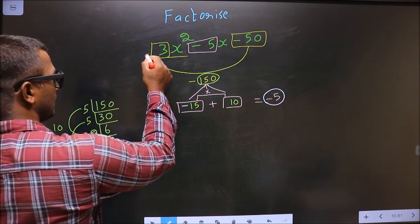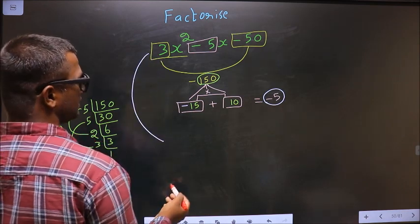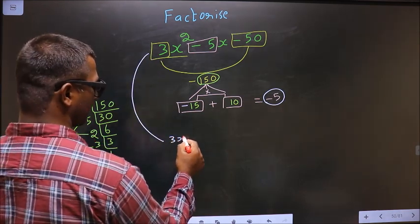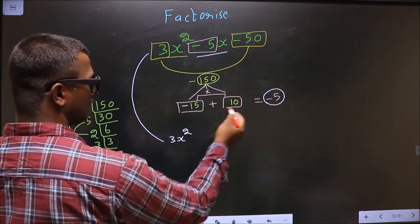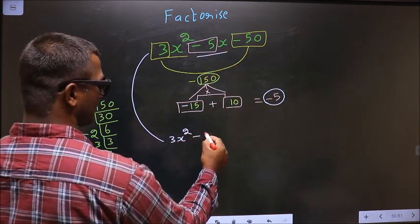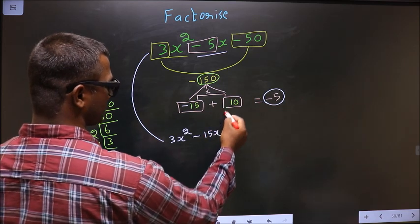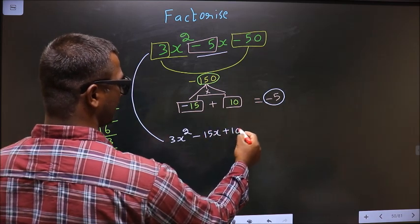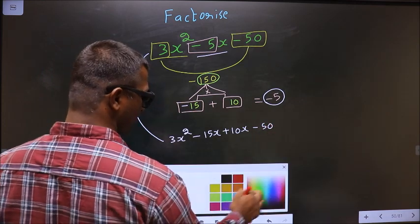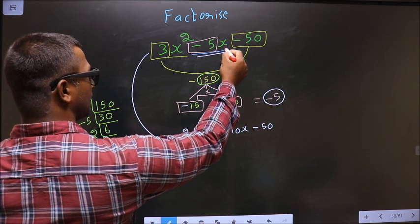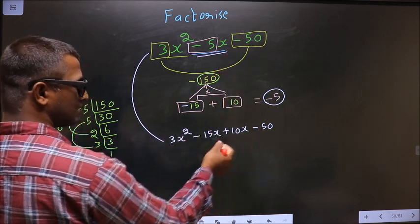Now change the equation. In place of -5x, write -15x + 10x - 50. In place of -5x, I've written this.